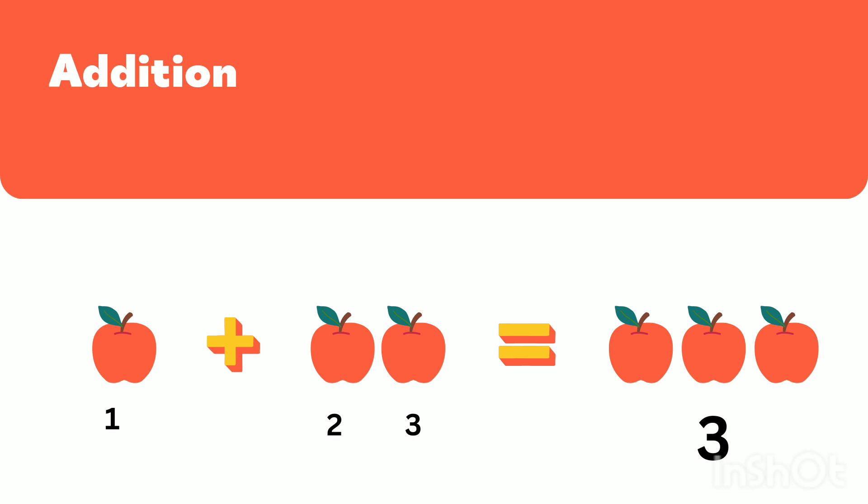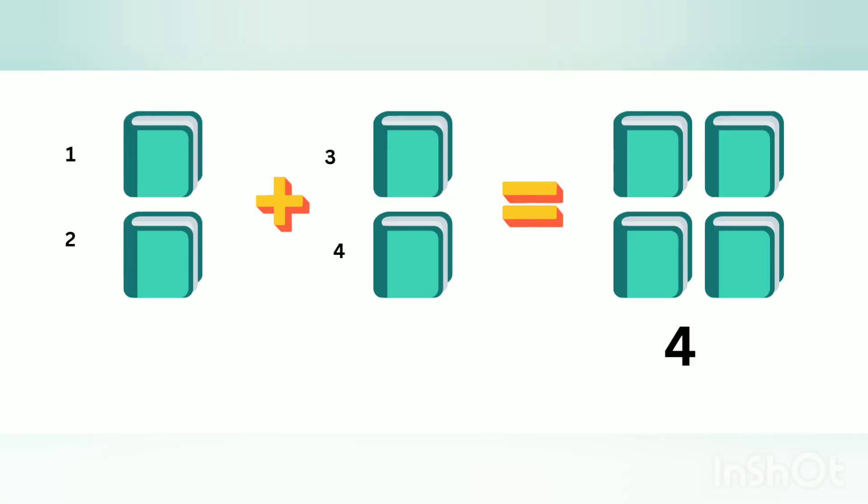Let's count together — repeat after me: one, two, three apples. Totally we have three apples. Here we have some blocks. Let's see: two plus two gives four. Let's count again: one, two, three,